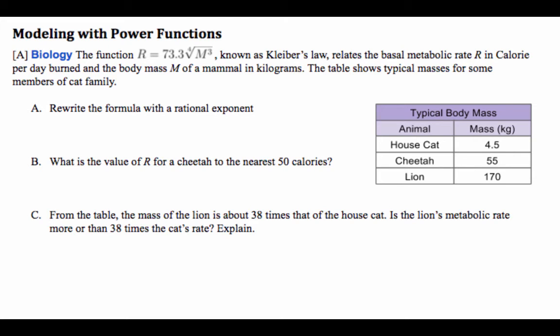So 100 kilos is the size of, you know, probably a good solid linebacker. Alright, so we're going to rewrite the formula in a rational exponent. This is the portion that we're interested in: 4th root of M cubed. We simply write that portion as M to the 3/4, and then we're done.